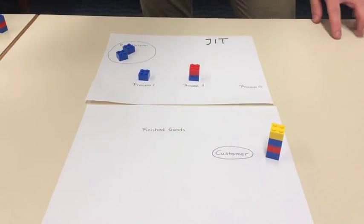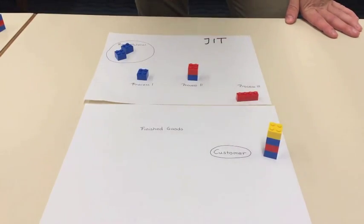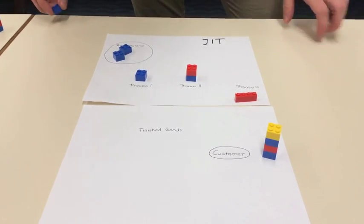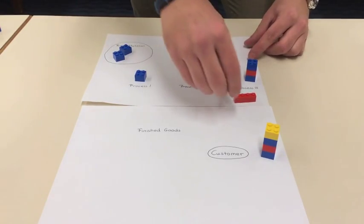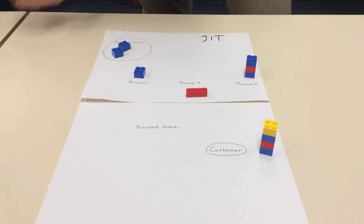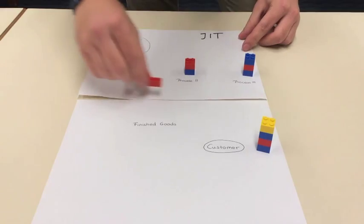This works through a Kanban system. A signal shows the preceding process, in our case process 3, that material supply is needed for the next downstream process. Process 3 then sends this signal back to process 2, who again sends it back to process 1, who then sends it to raw materials.